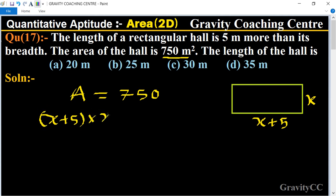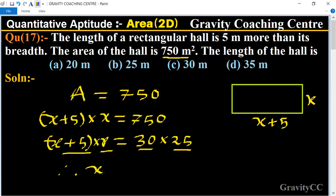750. We can write 750 as 30 times 25. (x plus 5) times x, so x equals 25.